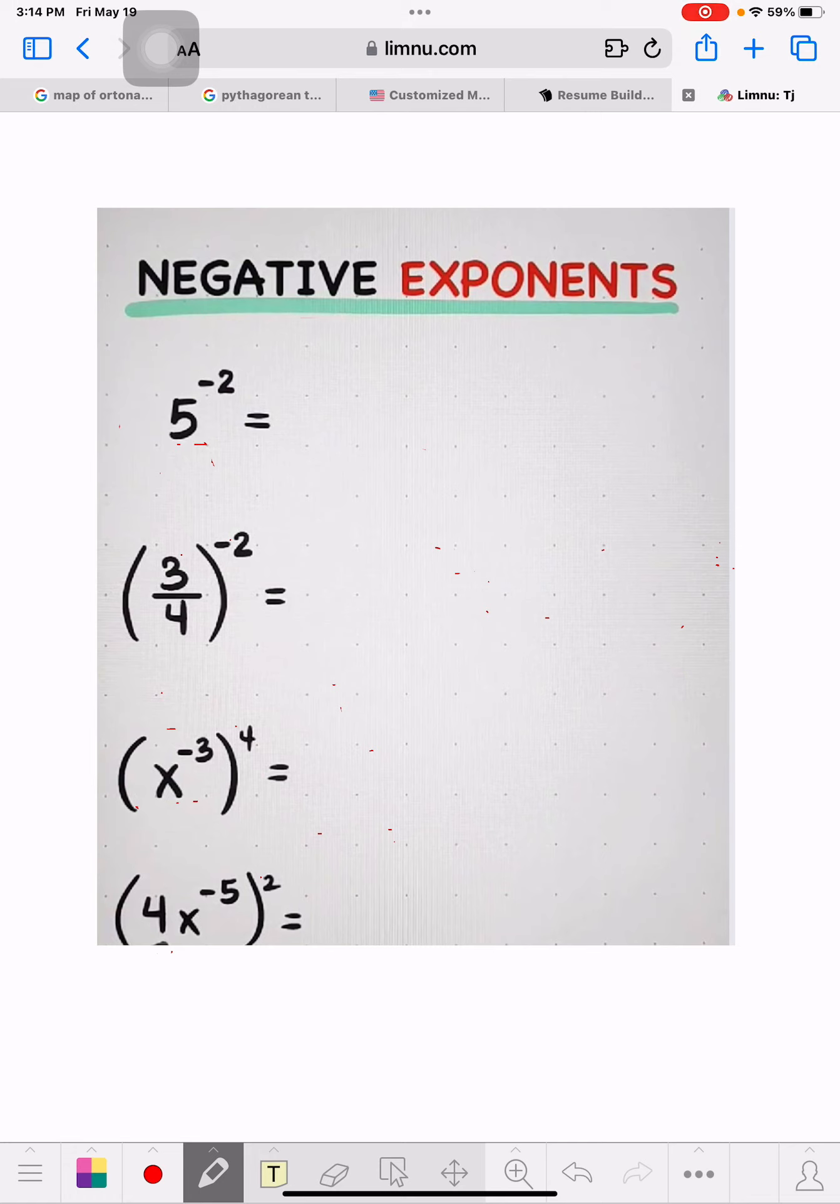The way this works is when you get 5 to the negative 2, you really just flip it. So the 5 goes down. The 5 just reverts. This is really 5 over 1, so that makes it a little easier.